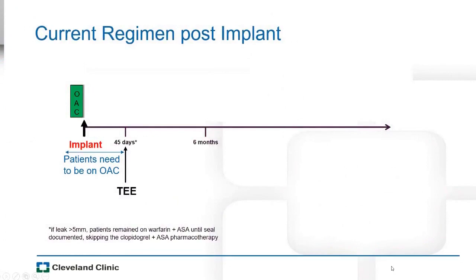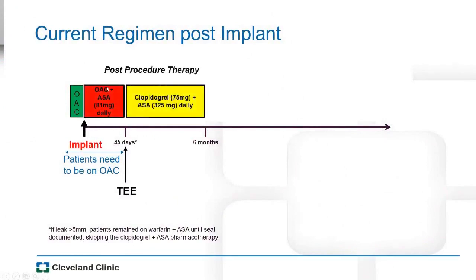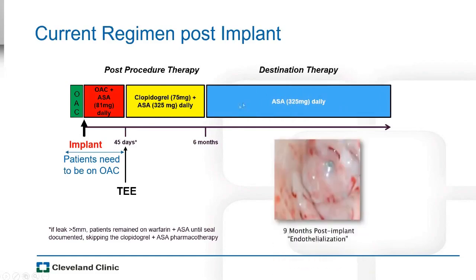Once the Watchman device is implanted, the patient must be on oral anticoagulation plus aspirin for 45 days. After 45 days, a TEE confirms no clots on the device and adequate seal. If confirmed, the patient switches to Plavix and aspirin for six months, then aspirin indefinitely — the rationale being that by that time there has been adequate endothelialization of the device, making the risk of clot formation on the device relatively small.